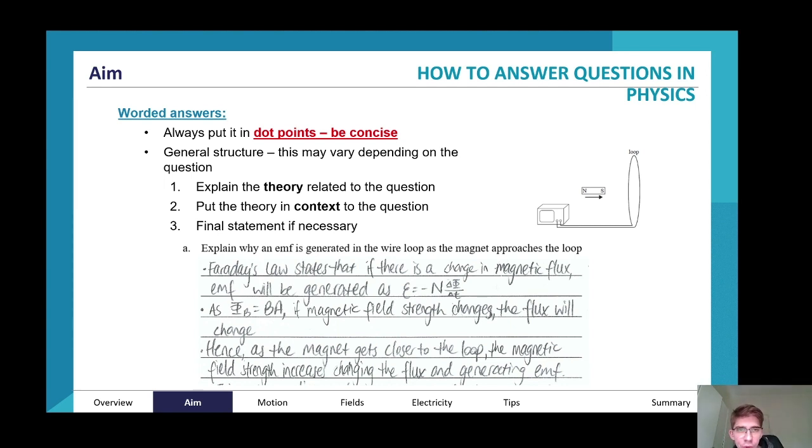The answer will contain three main points. First, you need to explain the theory related to the question. Faraday's law states that if there is a change in magnetic flux, EMF or voltage will be generated. The equation of voltage is negative n multiplied by changing flux over change in time, which is essentially a derivative of a flux time graph multiplied by the number of coils in a particular loop.